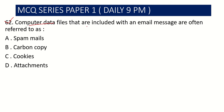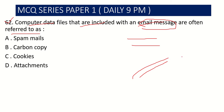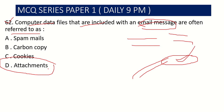Question number 62: Computer data files that are included with an email message are often referred to as — in simple words, if you are sending an email to a person and you attach some files from your computer, what is that thing called? It is called an attachment. I mistakenly gave away the answer, but I think you all know this.